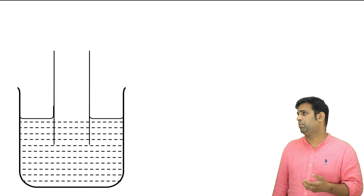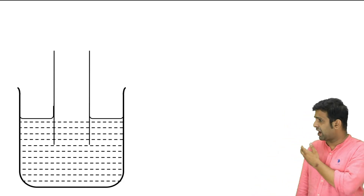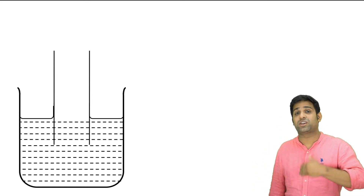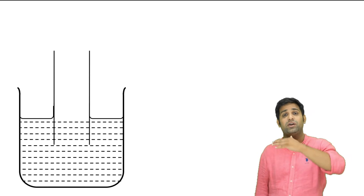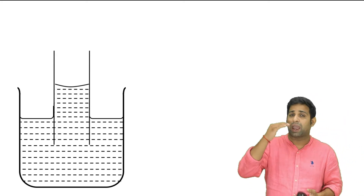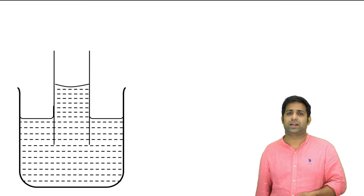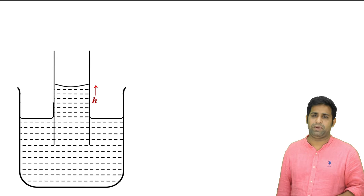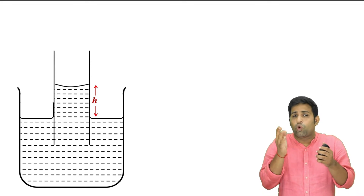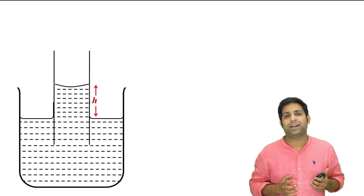So let's talk about a beaker, and in that beaker I have added a capillary tube. The liquid is partially wetting the solid. Let h be the height of the capillary rise. Now, the upper liquid surface always tries to contract its surface area.